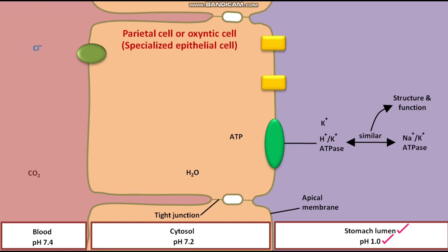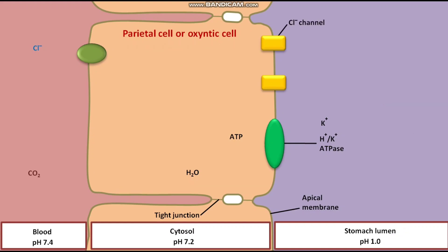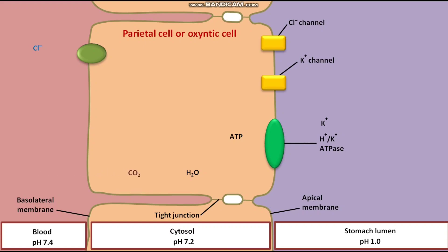The apical membrane also has a Cl- channel and a K+ channel. The oxyntic cell has a basolateral membrane. The CO2 present in the blood diffuses into the cytosol through the basolateral membrane.